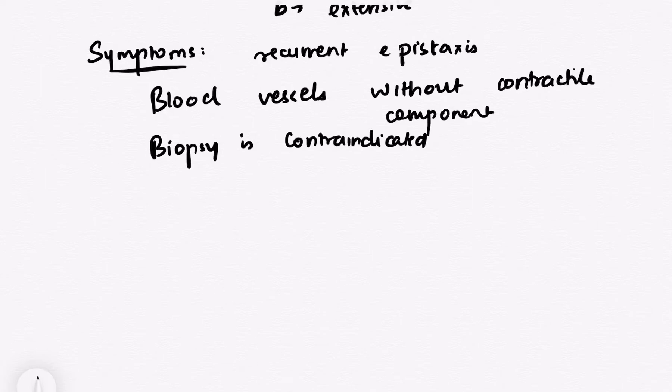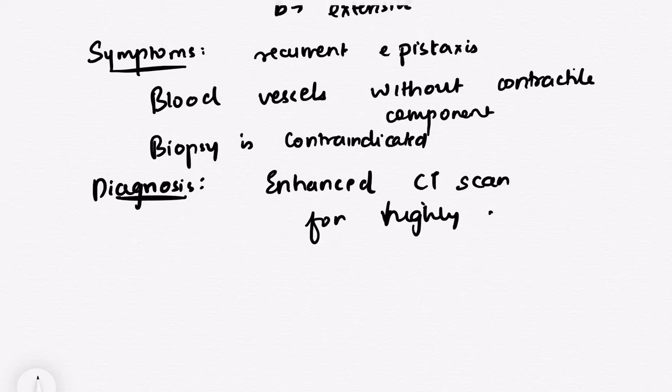Now talking about the diagnosis, the diagnosis is basically enhanced CT scan. Why enhanced? Because we want to see vessels here and vessels can be seen by injecting some dye in the veins which spread ultimately to arteries and then finally taking a CT scan. So in the CT scan, in a contrast enhanced CT scan, there would be highly vascular structure behind the maxillary sinus which is pushing the maxillary sinus.